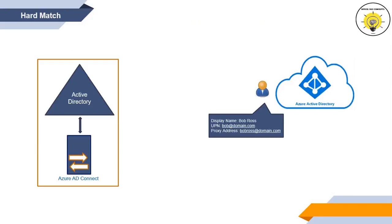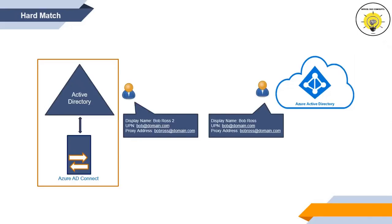Hard match is performed on the basis of only one attribute, which is immutable ID. Let's assume we have a user account in Office 365 with display name Bob Ross, user principal name bob@domain.com, and proxy address bobross@domain.com. Similarly, we have one account in on-premise Active Directory with display name Bob Ross 2, but the same user principal name and proxy address. So the display name for these two accounts is different, and you want to match these two accounts with each other. In this case, soft match will not work because the display name, user principal name, and proxy address attributes should have the same values for both accounts.